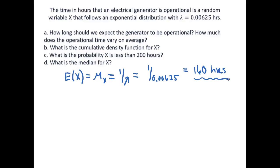Now how much does the operational time vary on average? And so the variation on average is going to be the standard deviation. So the SD of X is equal to the square root of our variance of X, and the variance of an exponential random variable is 1 over lambda squared. And so if we were to just look at this, if we were to take the square root of the numerator and the denominator before we even put in our values, we find that the standard deviation of an exponential distribution is still just 1 over lambda.